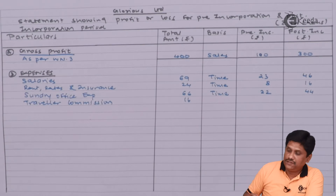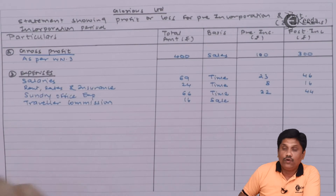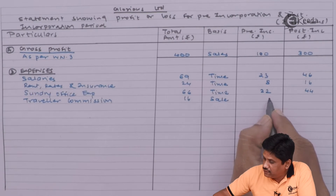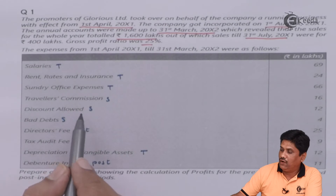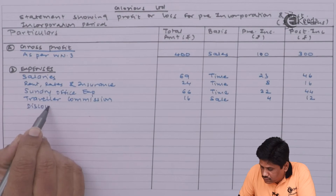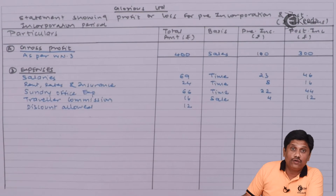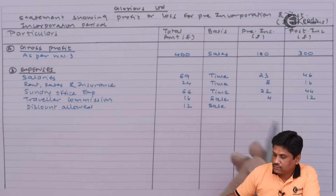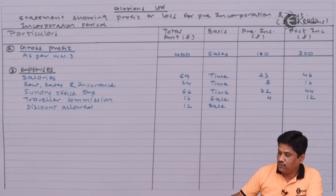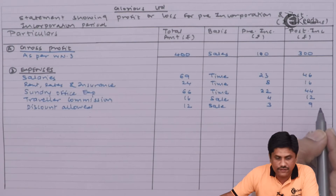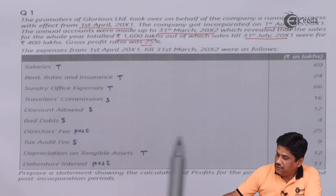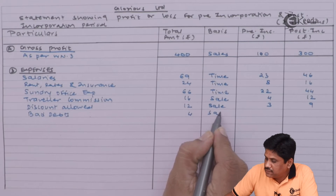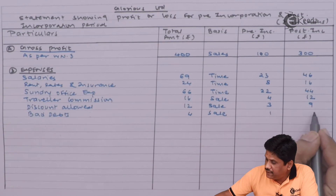Travelers commission is allocated on sales ratio 1:3, divide by 4 — giving 4 and 12. Discount allowed is 12 lakhs, allocated on sales ratio 1:3, divide by 4 — giving 3 and 9. Bad debts amount is 4 lakhs, also on sales ratio 1:3 — giving 1 and 3.